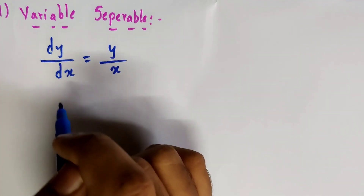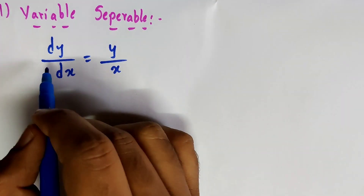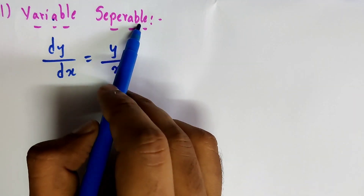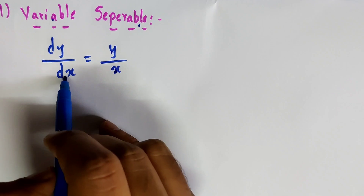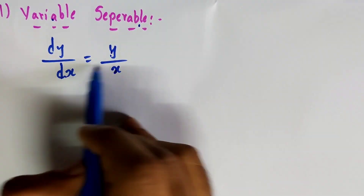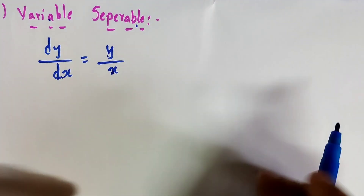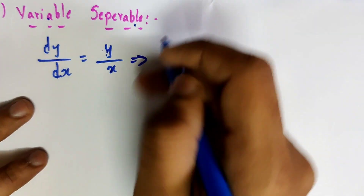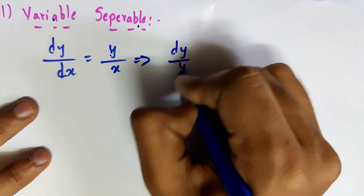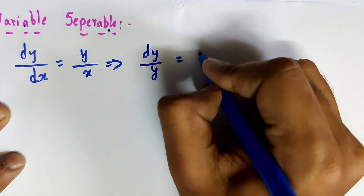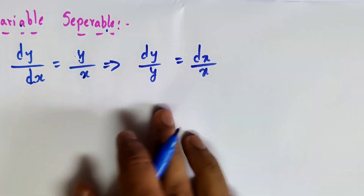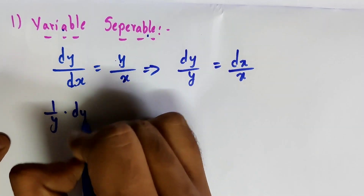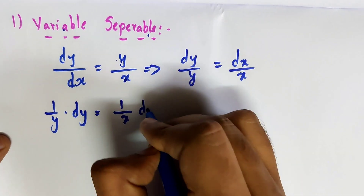This method is called variable separable. The name itself tells you — separate the variables. Keep x terms on the x side and y terms on the y side. x and y are the two variables, along with their respective derivative terms. We need to separate them. So from dy/dx equals y/x, we get dy/y equals dx/x, which means 1/y times dy equals 1/x times dx.